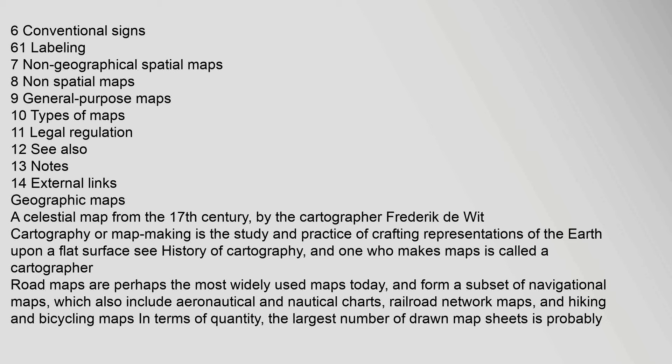A celestial map from the 17th century was produced by the cartographer Frederick De Witt. Cartography or map making is the study and practice of crafting representations of the earth upon a flat surface, and one who makes maps is called a cartographer. Road maps are perhaps the most widely used maps today, and form a subset of navigational maps, which also include aeronautical and nautical charts, railroad network maps, and hiking and bicycling maps.